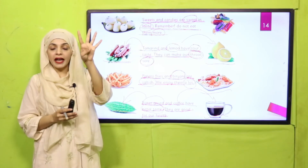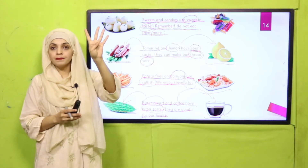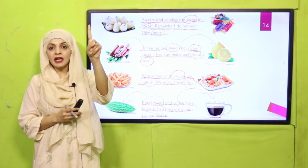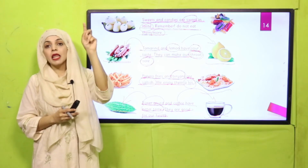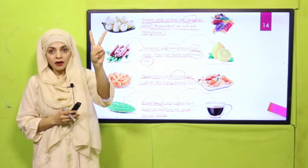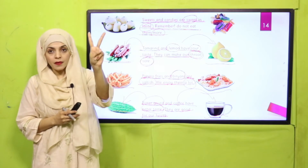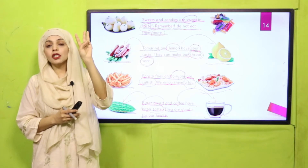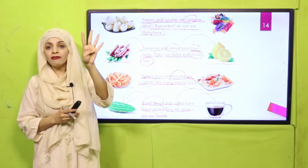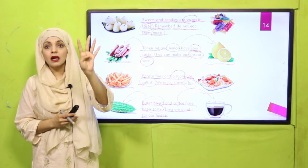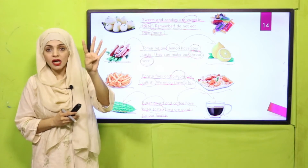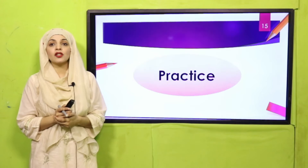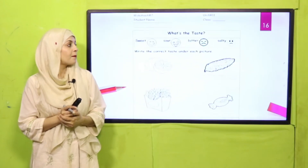We have now read about four tastes. Number one: sweet. Number two: sour. Number three: salty. Number four: bitter. Very good. Now let's move towards the practice page.